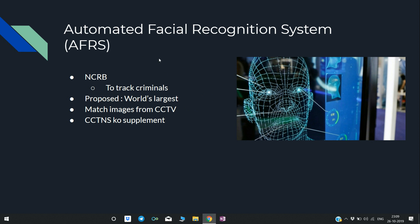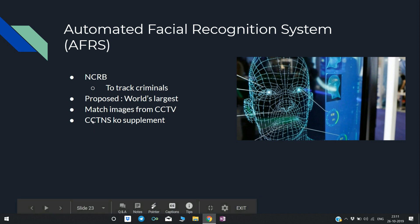AFRS — Automated Facial Recognition Scheme — has been proposed by NCRB (National Criminal Records Bureau) to track criminals. It is still in the proposal stage and is said to be the world's largest such system. It will match faces with images from CCTV and will supplement CCTNS — Crime and Criminal Tracking Network System — to help reduce crime.